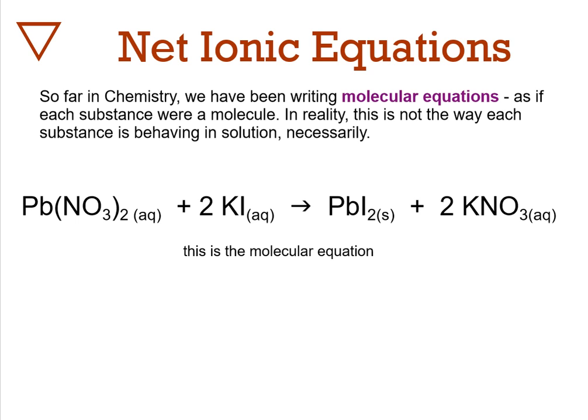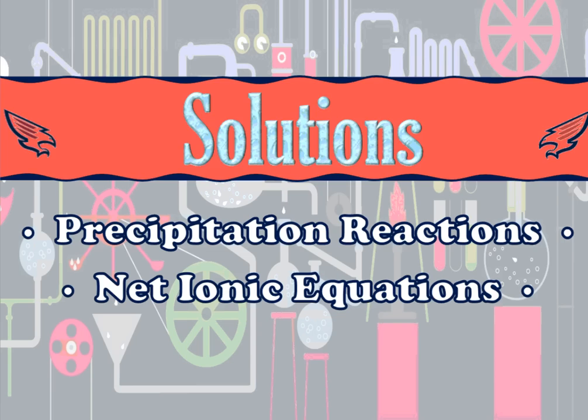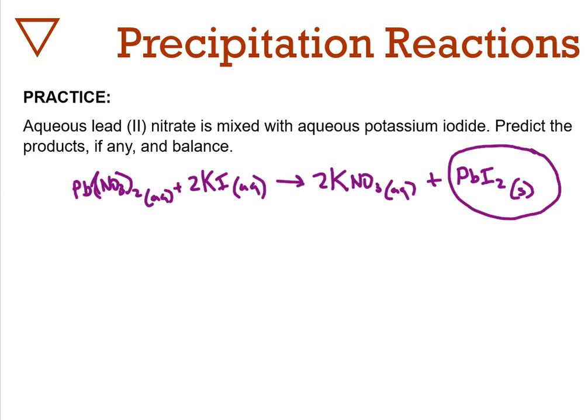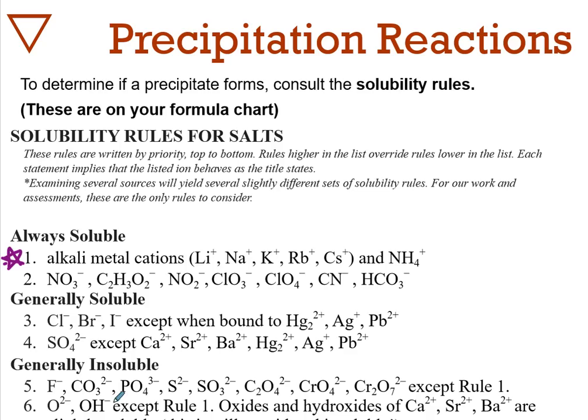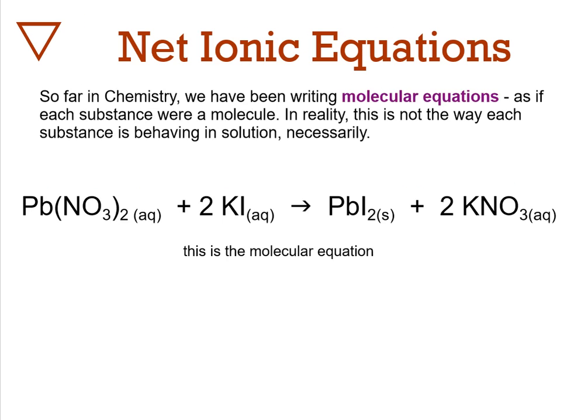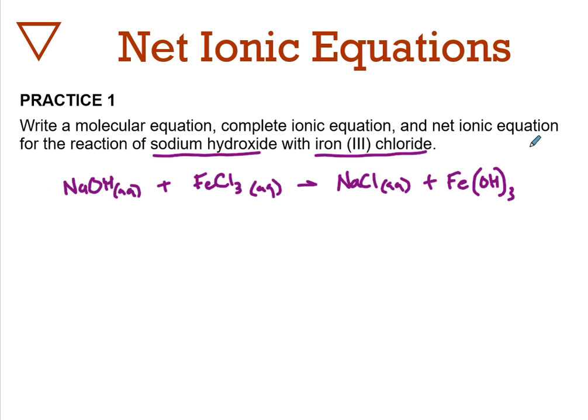Let's look at the solubility table. Hydroxides - generally insoluble except rule one and calcium, strontium, barium. Therefore iron three hydroxide is a solid precipitate. We need to balance: three NaCl, three NaOH, and that should do it.